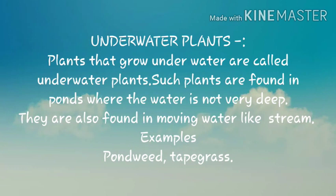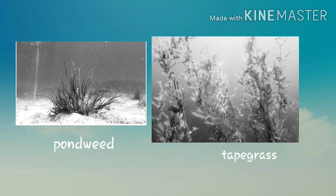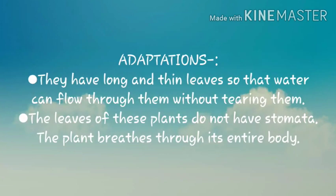Plants that grow underwater are called underwater plants. Such plants are found in ponds where the water is not very deep. They are also found in moving water like a stream. Pond weed and tape grass are examples of underwater plants.